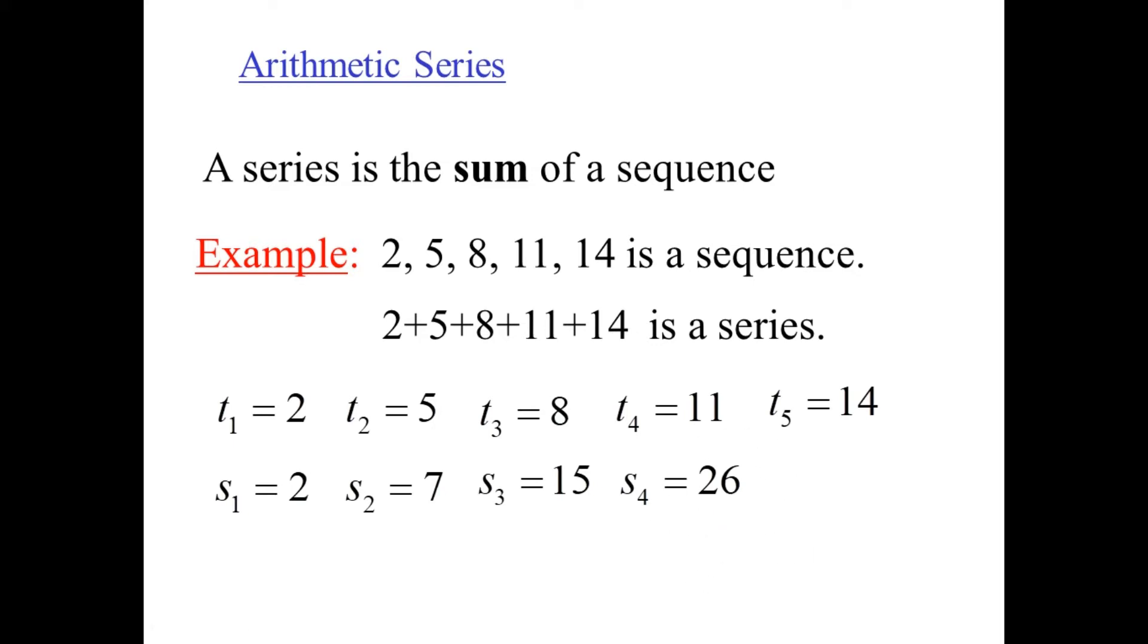So to get S sub 5, this 26 and add that 14. And we've got S sub 5, 40. So we concern ourselves with sums, the sum of terms, S subscript. And S sub N is the previous sum plus the current term.